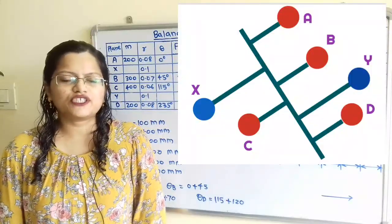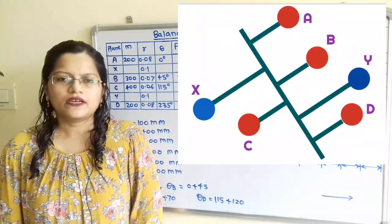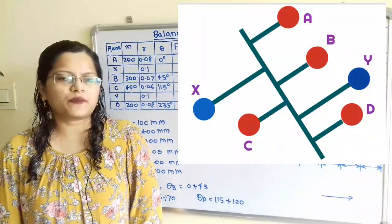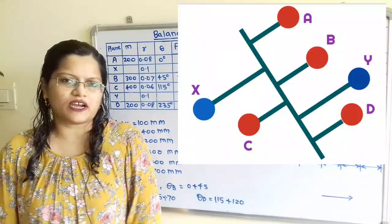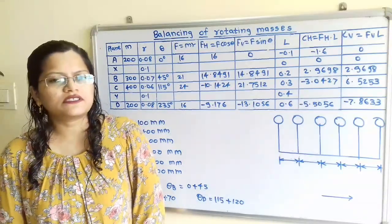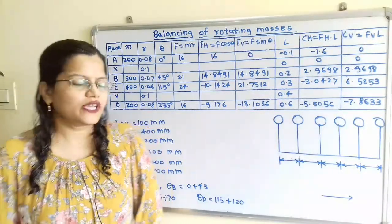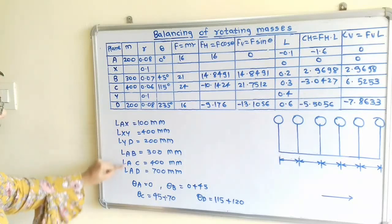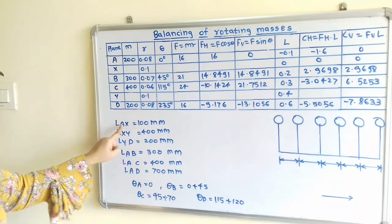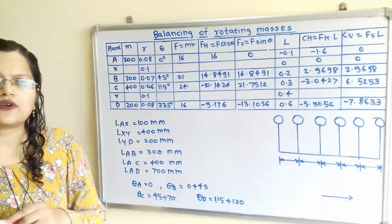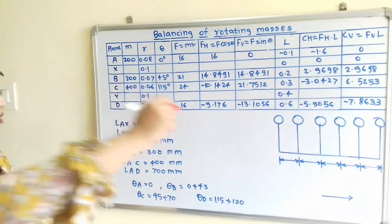In this question, four masses are rotating in planes A, B, C and D. Two balancing masses are provided rotating in planes X and Y about the same shaft. Let us first decide the sequence of these planes with the help of the given data. The axial distances between the different planes are mentioned. The minimum distance given is between A and X, equal to 100 mm, which we will show as 0.1 meter.